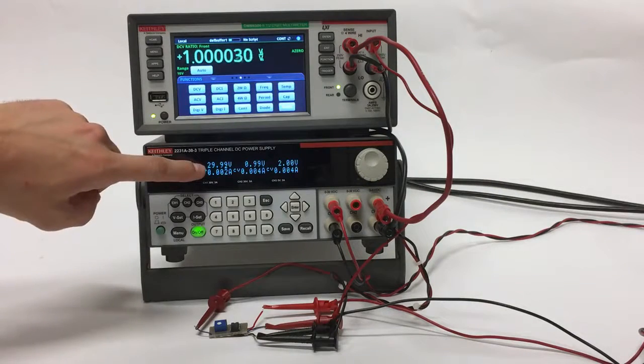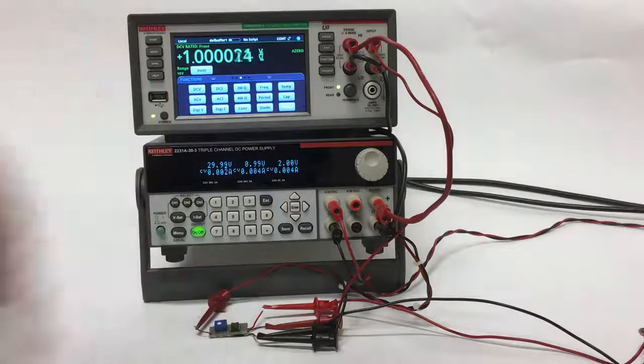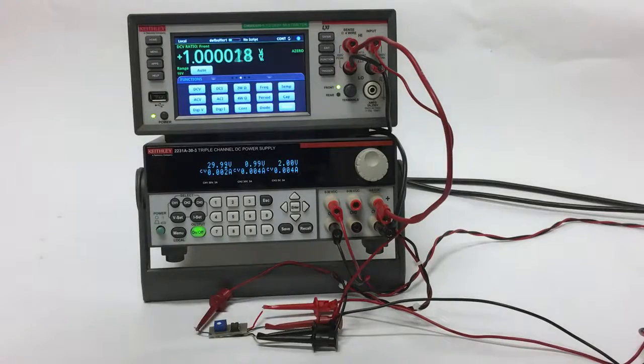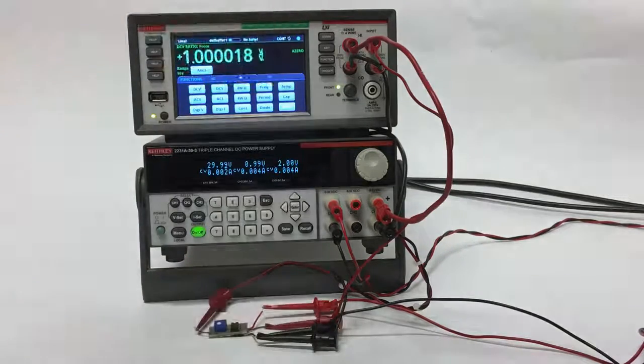As you can see, I'm powering my op amp with a 30 volt rail, and my input signal is 2 volts DC. I'm measuring my input of the amplifier with the sense terminals of the DMM and my output with the input terminals of the DMM.